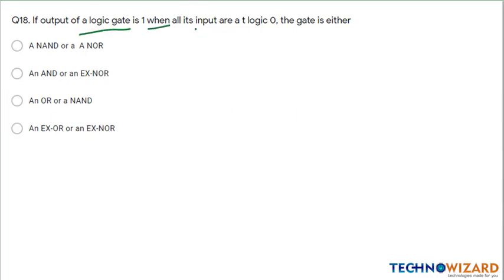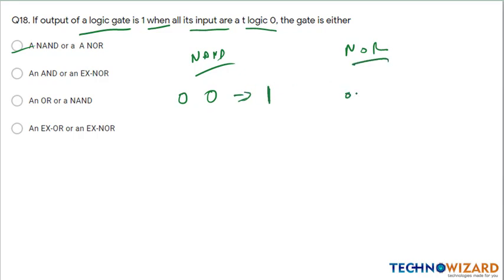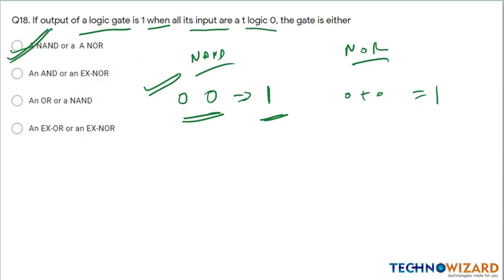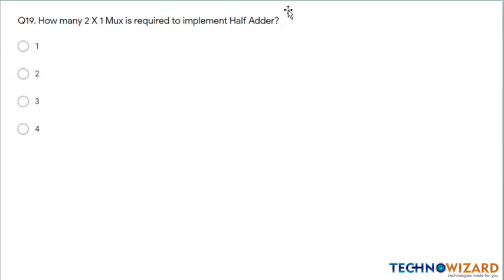Question number 18: if the output of a logic gate is 1 when all its inputs are 0. For a NAND gate: 0 AND 0 = 0, complemented gives 1 — correct. For a NOR gate: 0 OR 0 = 0, complemented gives 1 — correct. Both NAND and NOR satisfy this condition. Therefore option A — NAND gate and NOR gate — is the correct answer.